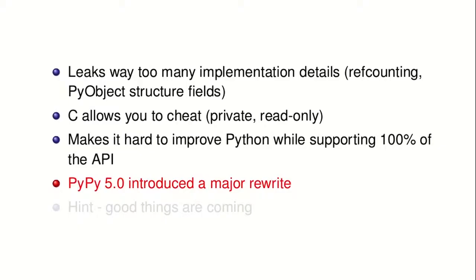PyPy 5.0, released about three weeks ago, introduced a major rewrite of our C API layer. We now have a very efficient way of calling from PyObjects on the C side into interpreter objects on the PyPy side, and synchronizing those objects. Good things are coming because we now have this better infrastructure — I'll talk about that toward the end, but first I'd like to talk about NumPy.